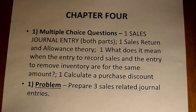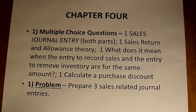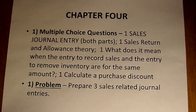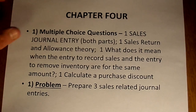The problem from Chapter 4 is: prepare three sales-related journal entries. That could be a basic sale, the purchase of merchandise, a sales return, and/or a sales allowance.